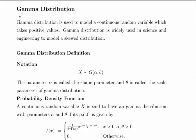In this presentation we are going to look at the Gamma Distribution. The Gamma Distribution is used to model a continuous random variable — it's a continuous probability distribution which takes positive values. The Gamma Distribution is widely used in science and engineering to model a skewed distribution.